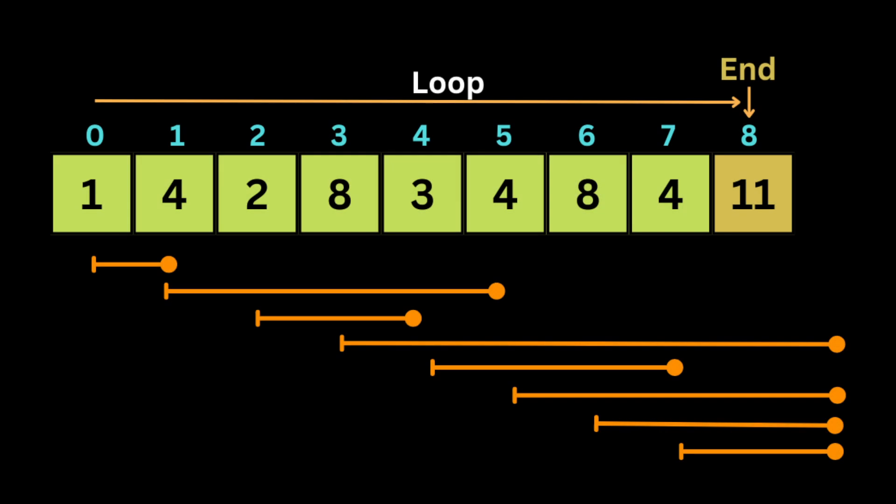Let's take an example to see how the greedy algorithm is going to work. We start at the first element of the array, which is 1, and add a pointer at the end of the array, which is 11. The first element is 1, which means we can jump one step — the maximum reach will be the number 4. The second element is 4, which means we can jump four steps and the maximum reach is index 5.